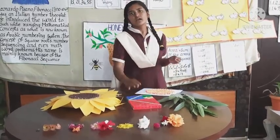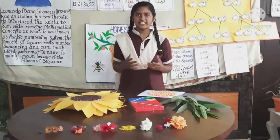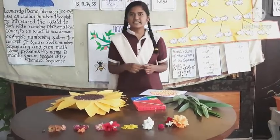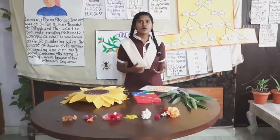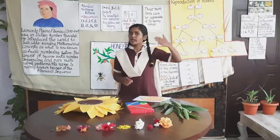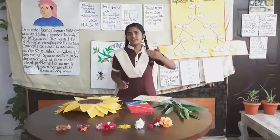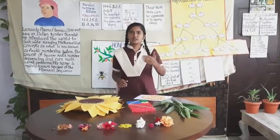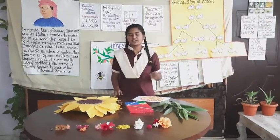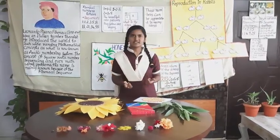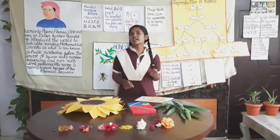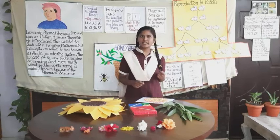If we keep dividing consecutive Fibonacci numbers, we get an interesting result. We get 1 divided by 1 equals 1, 2 divided by 1 equals 2, 3 divided by 2 equals 1.5, and 5 divided by 3 equals 1.6. If we keep going, we get an interesting number which mathematicians call phi (φ). The value of phi is 1.618.